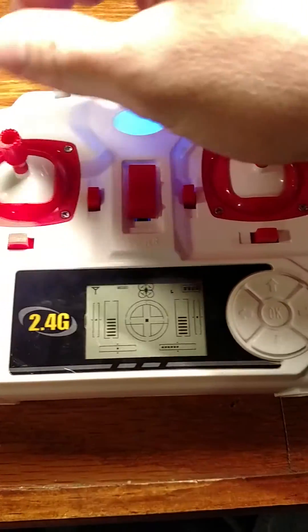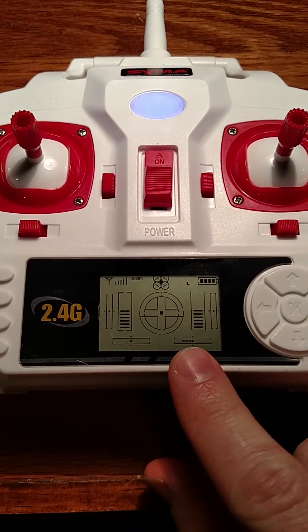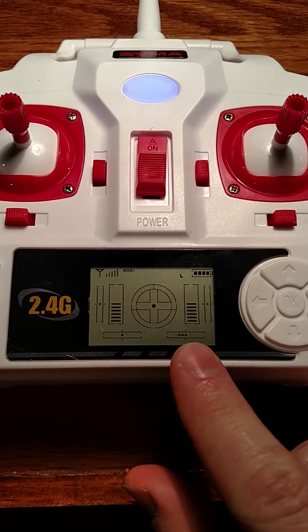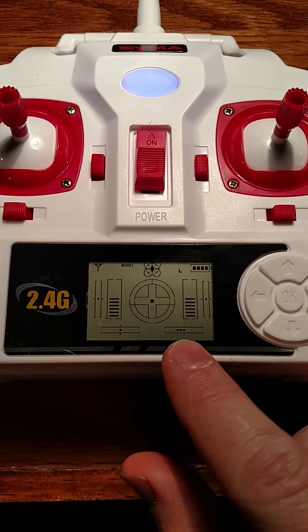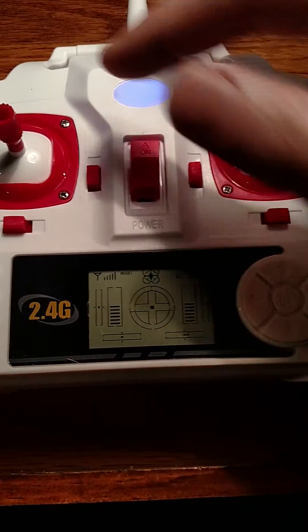So if I go up down like it says, the trim left right strafing trim starts all the way to the left and then gradually ticks its way over to the right. The other trims don't seem to do a thing.